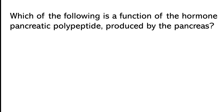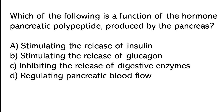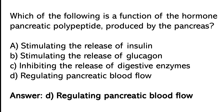Which of the following is the function of the hormone pancreatic follistatin peptide produced by the pancreas? Stimulating the release of insulin, stimulating the release of glucagon, inhibiting the release of digestive enzymes, or regulating pancreatic blood flow. The correct answer is option D — regulating pancreatic blood flow.